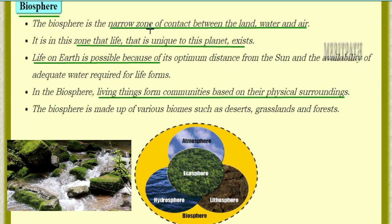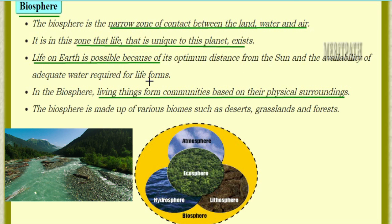Next is the biosphere. The biosphere is the narrow zone of contact between land, water, and air. All three of these are important because life exists because of them. Life on earth is possible because the earth is at a correct distance from the sun and there is availability of water for all living organisms.